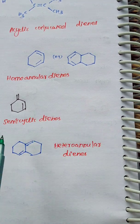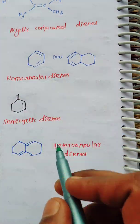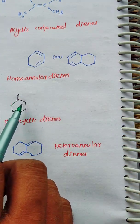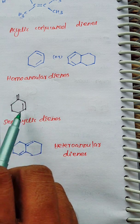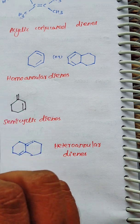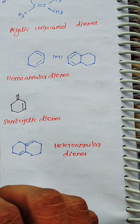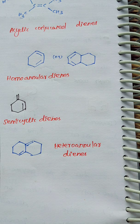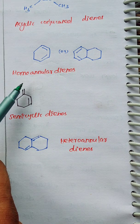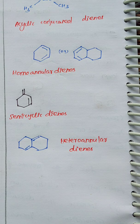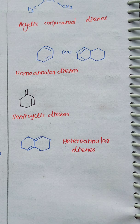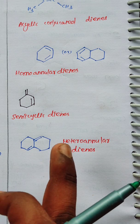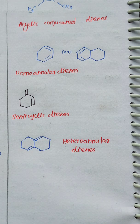Next is Semicyclic Dienes. This one also has alternating double bonds: double bond, single bond, double bond. There is one ring, but one double bond is inside the ring and one is outside the ring. That outside double bond is known as an Exocyclic double bond. This is the Semicyclic Diene system.